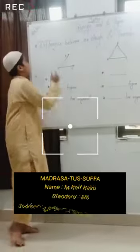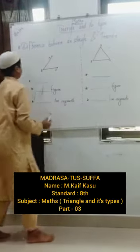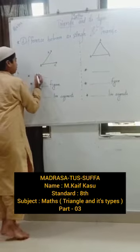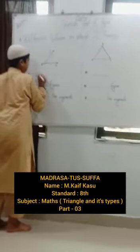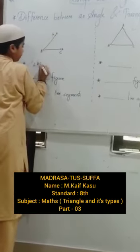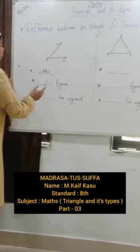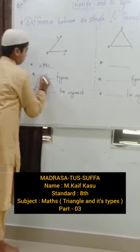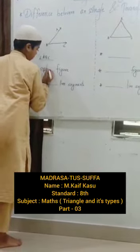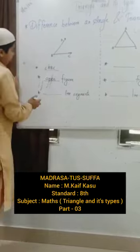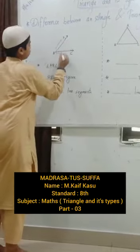Now I will tell you the difference between an angle and a triangle. First, we will write the name of the angle. Second, it is an open figure. Third, it has two line segments.